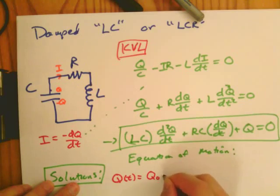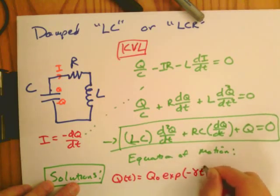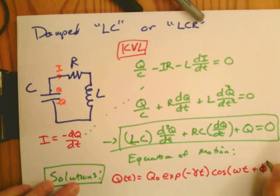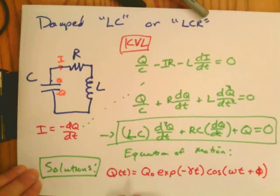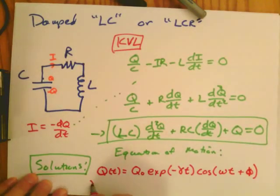The charge or any other thing is proportional to an exponential function times an oscillating function with some arbitrary phase. We just have to figure out what the values of these constants are.